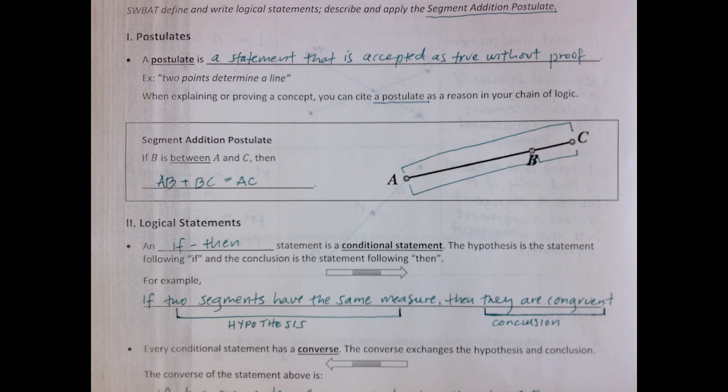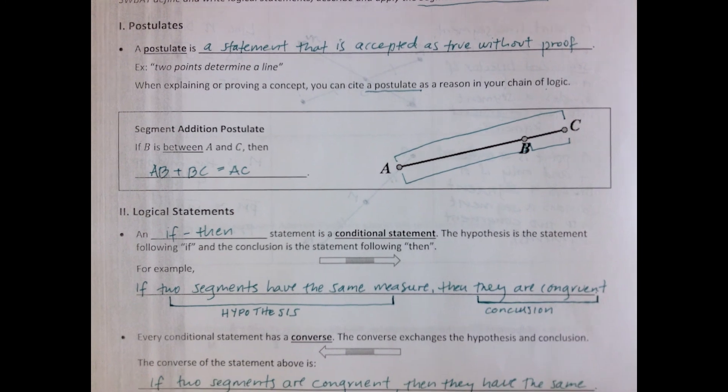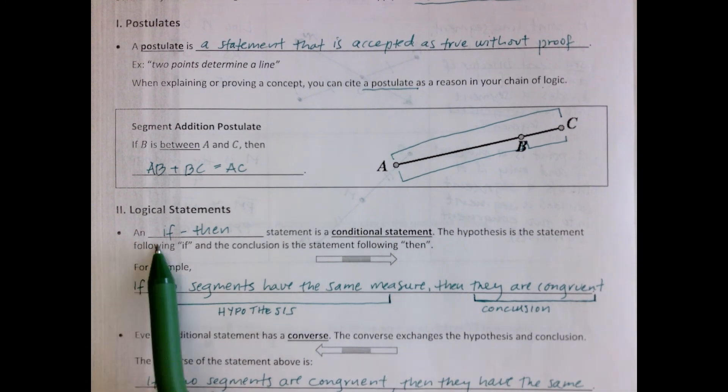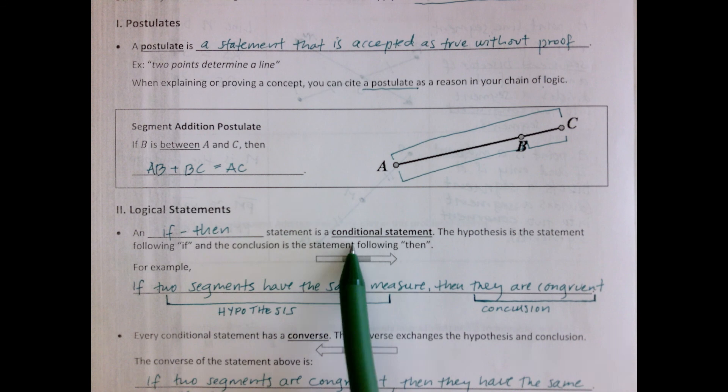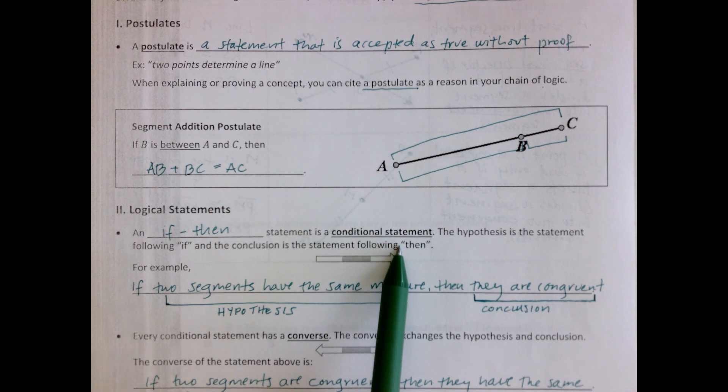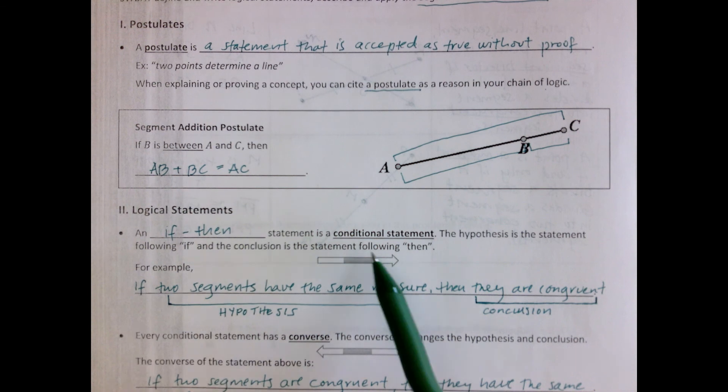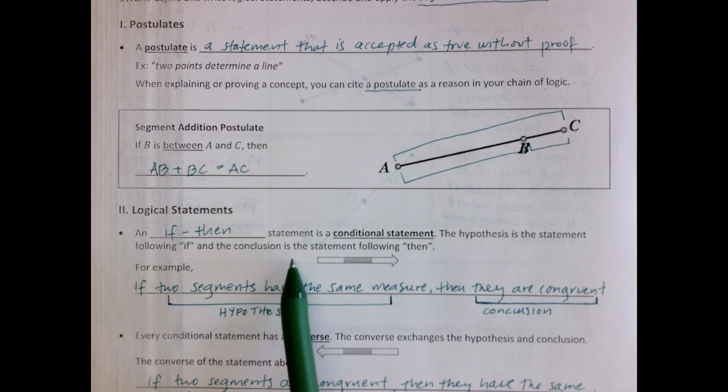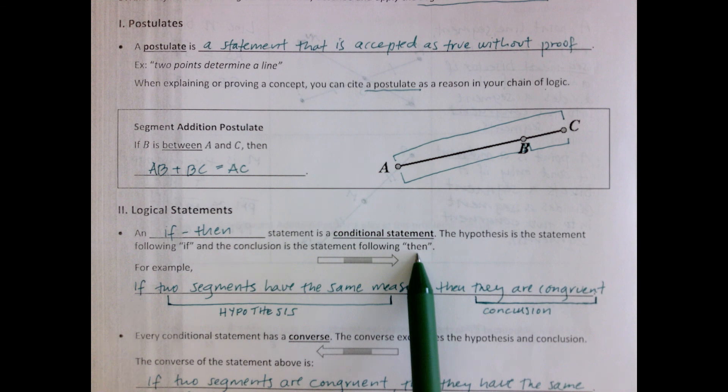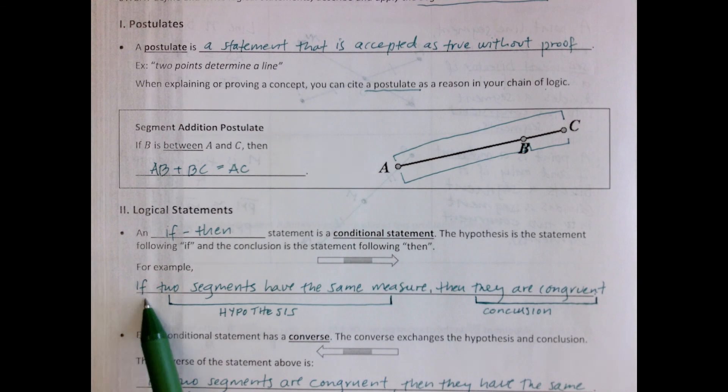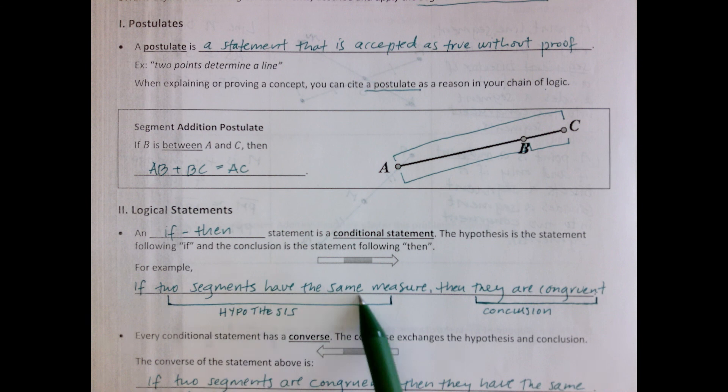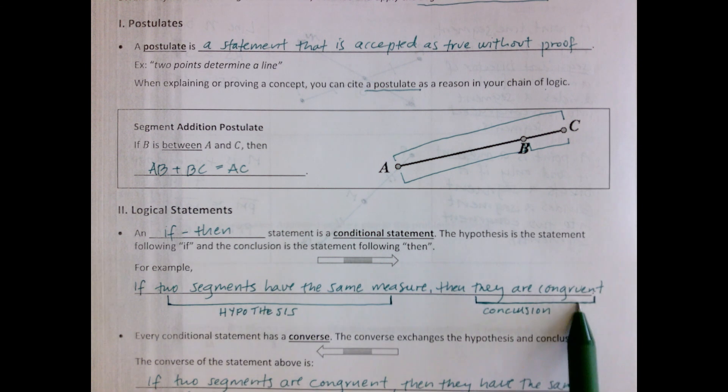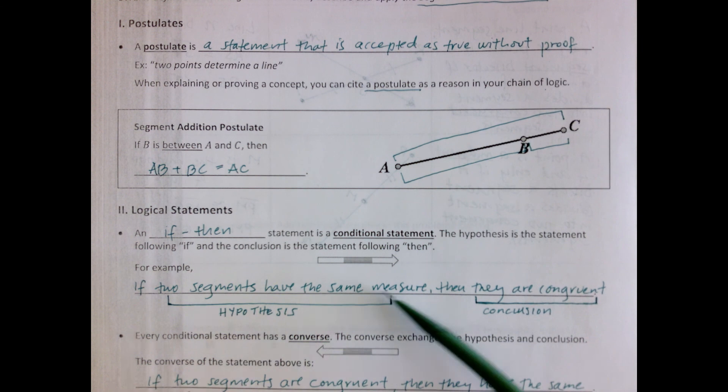On to logical statements. An if-then statement is a conditional statement, and this is a very vocabulary-heavy section. The hypothesis is the statement following if, and the conclusion is the statement following then. For example, if two segments have the same measure, that's the hypothesis, then they are congruent.